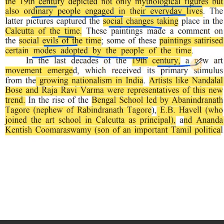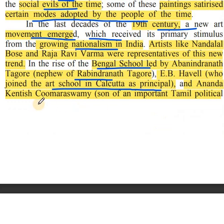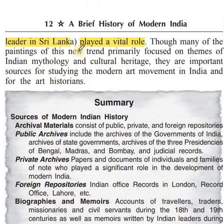In the last decade of the 19th century, a new art movement emerged which received prime stimulus from the growing nationalism in India. Artists like Nandalal Bose and Ravi Varma were representatives of this new trend. The rise of the Bengal School was led by Abanindranath Tagore, nephew of Rabindranath Tagore, E.B. Havell who joined the art school in Kolkata as principal, and Ananda Kentish Coomaraswamy, son of an important Tamil political leader in Sri Lanka, all played a vital role.